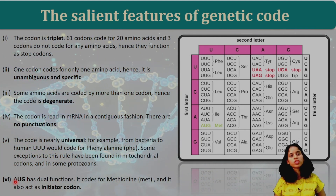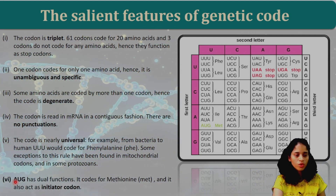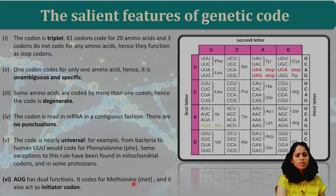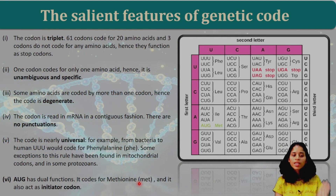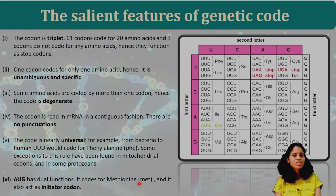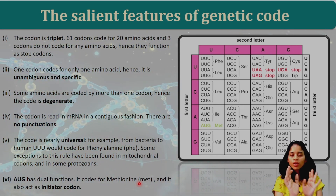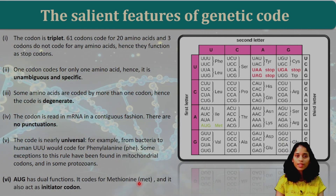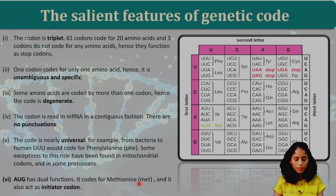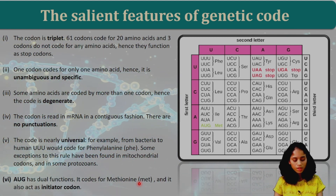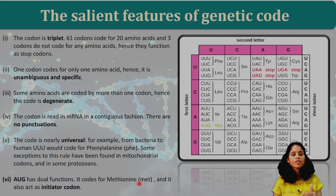The AUG codon has dual functions. It codes for the amino acid methionine, and at the same time it acts as the initiator codon for protein synthesis. So AUG can perform two functions: coding for an amino acid and initiating translation. These are the salient features of the genetic code.